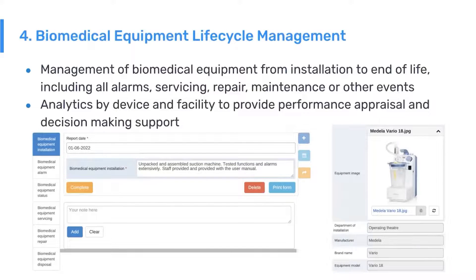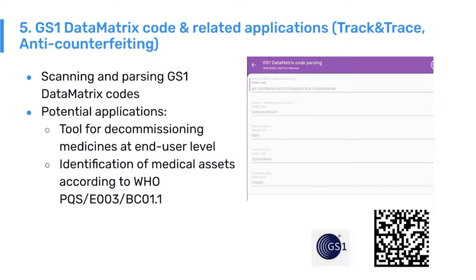A biomedical equipment lifecycle management program allows for managing different types of equipment, including cold chain equipment, from the moment it is installed — capturing alerts, managing status, service and repairs — down to its end of life and disposal, allowing for an integrated and complete stock card for that item. There is also GS1 data matrix code support, which allows for different applications including track and trace and anti-counterfeiting, by reading and parsing GS1 data matrix codes and integrating them with relevant databases.